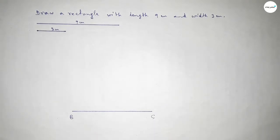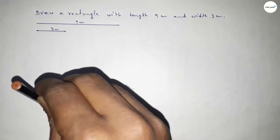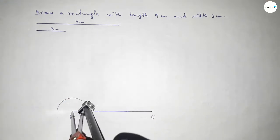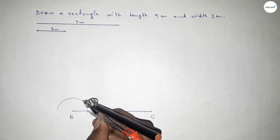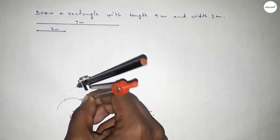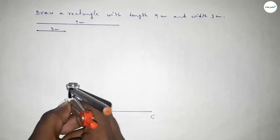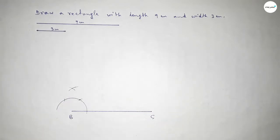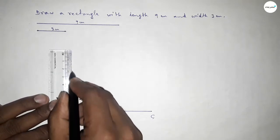Taking here point B and here point C. Now we have to draw a 90 degree angle on point B. Putting the compass on point B, taking any length, and drawing an arc. Then putting the compass here and cutting here, and again putting the compass here and cutting here, and drawing another arc with the same length. Both curves intersect at a point.